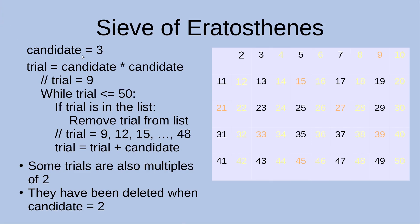After setting up candidate 3, I set the trial number equal to the square of the candidate, so trial becomes 9. While the trial number is still smaller than or equal to 50, I remove the trial numbers: 9, 12, 15, up to 48. But we notice that some of these, like 12, have already been removed by the previous step, since they are already multiples of 2. So the numbers that are actually required to eliminate in this round are only those shown in orange.